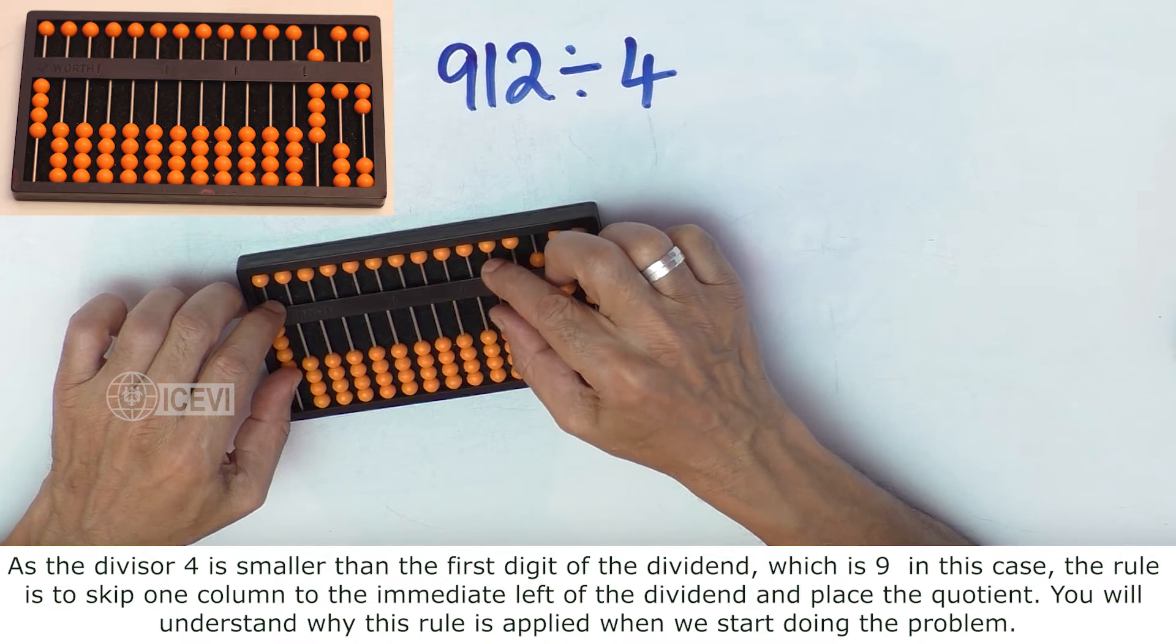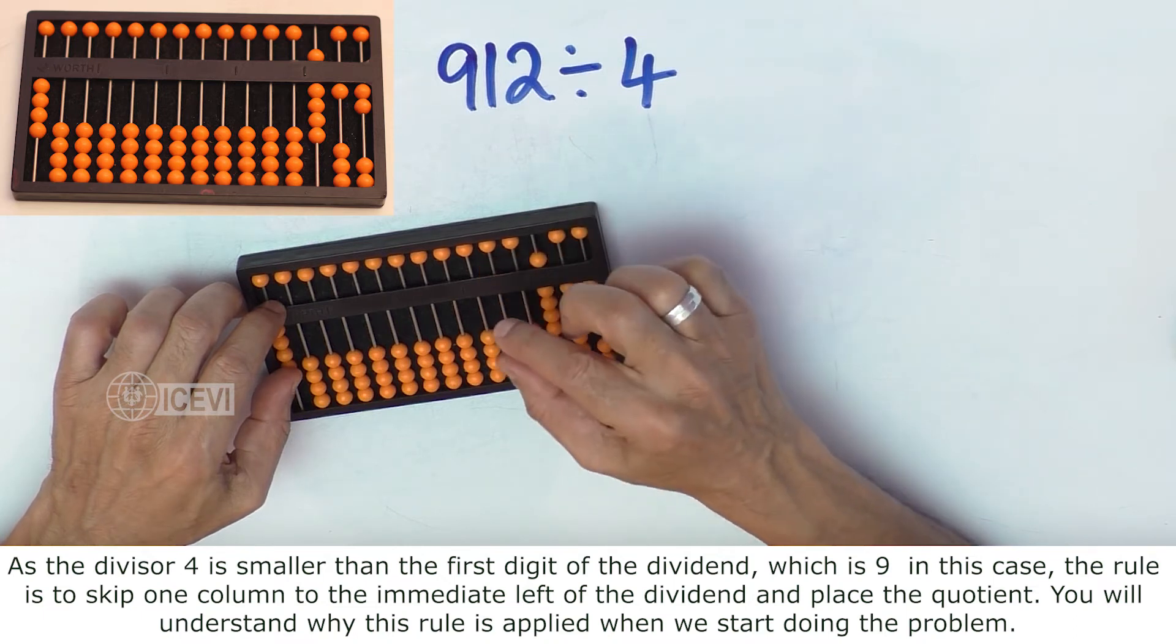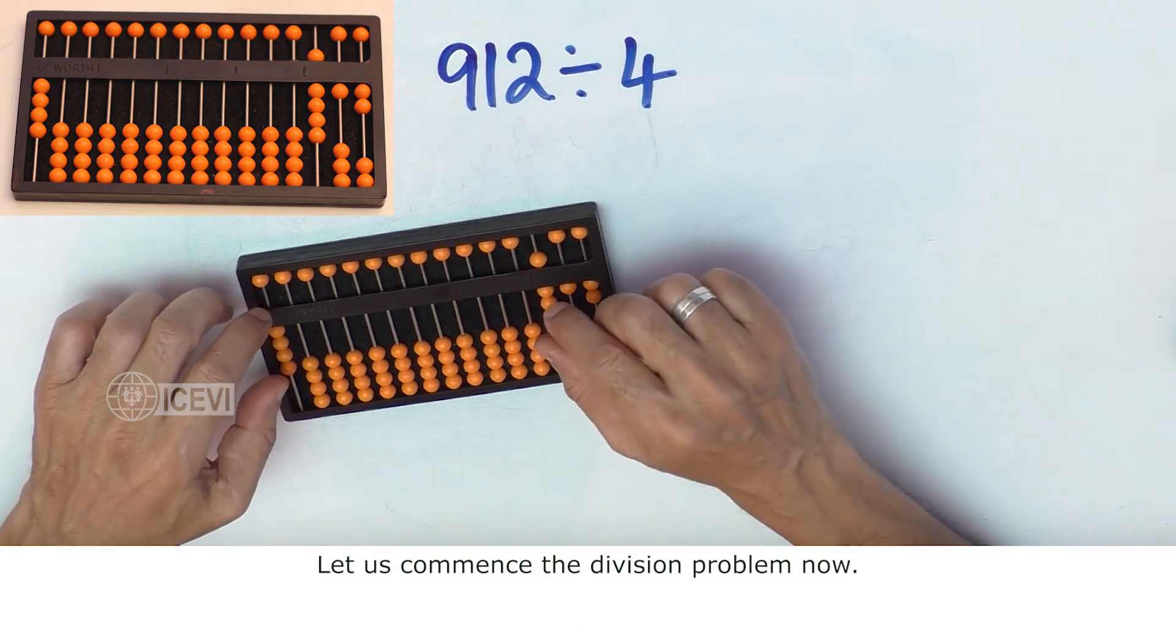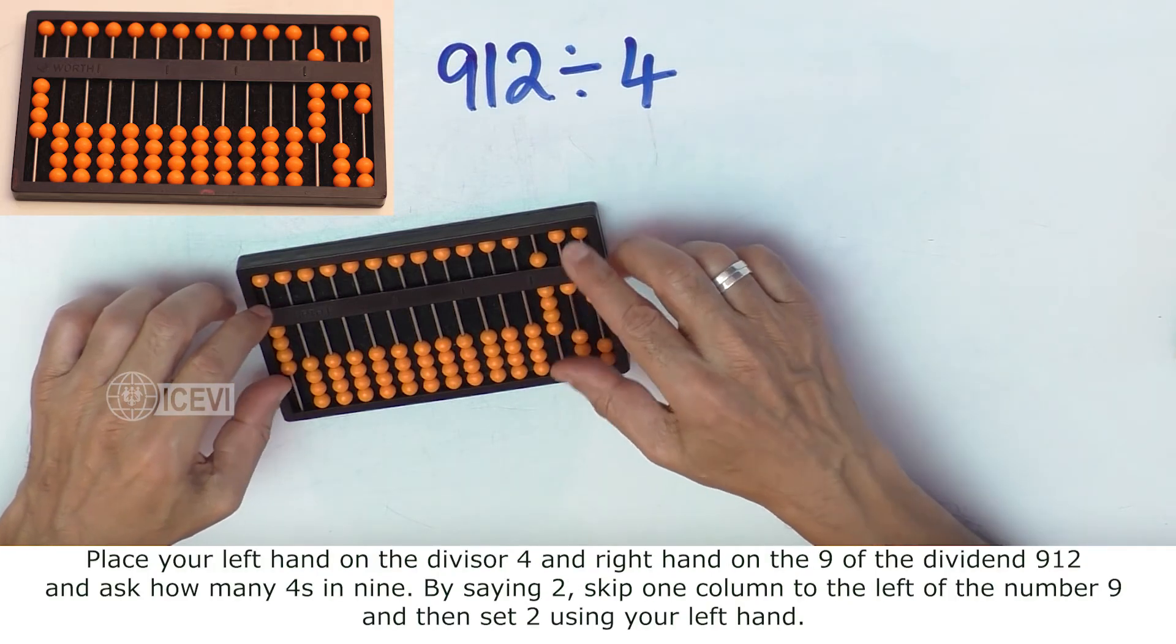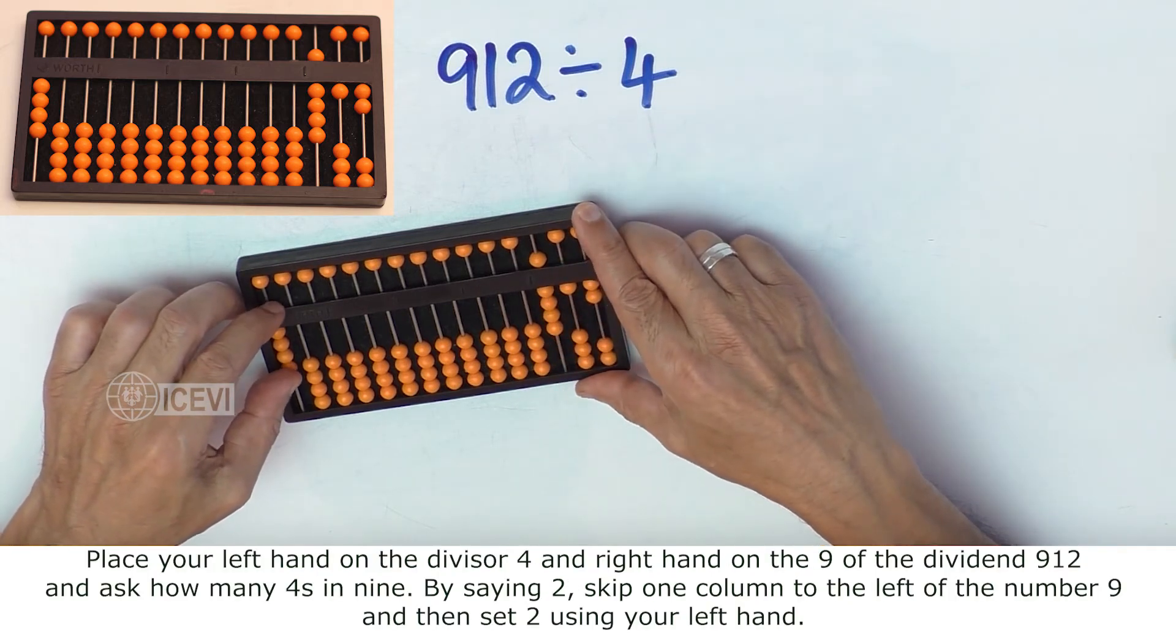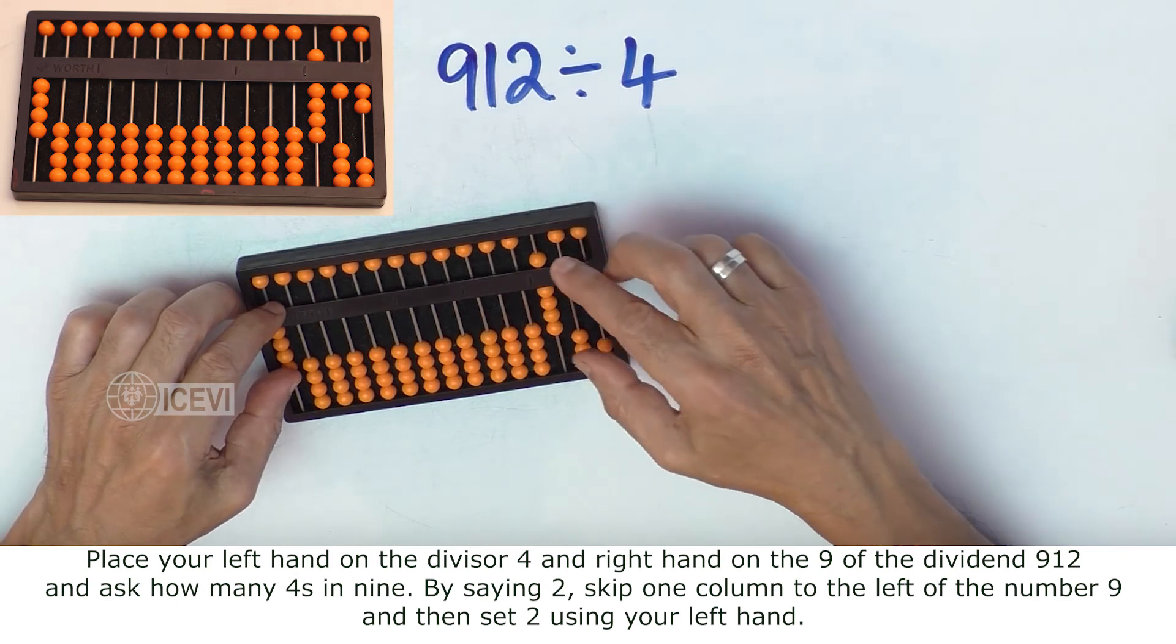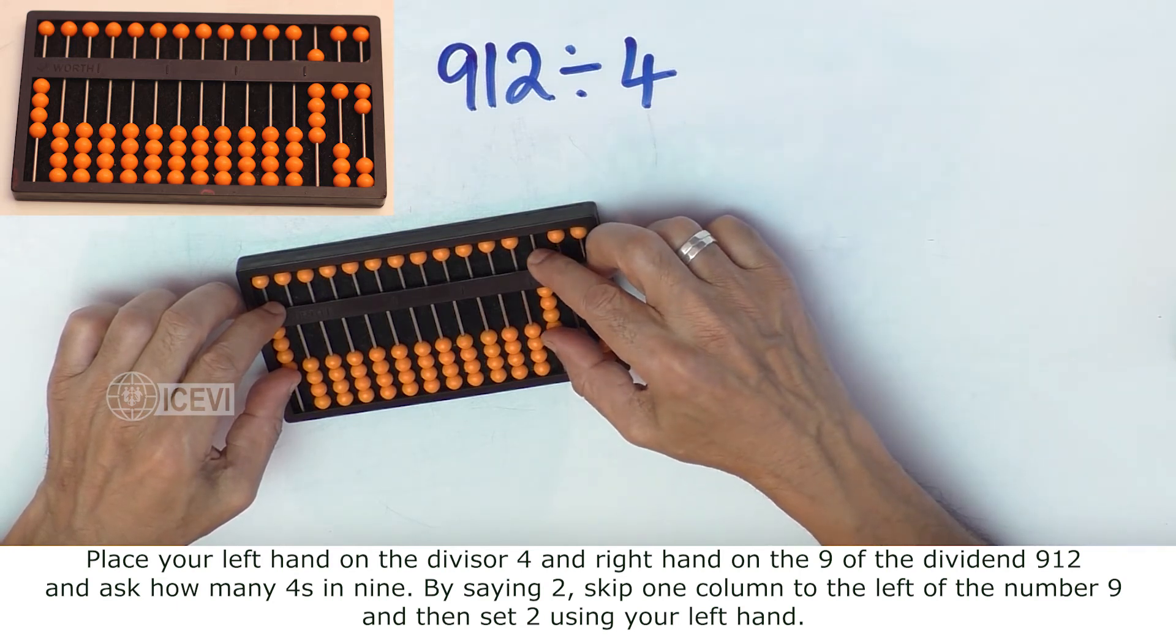You will understand why this rule is applied when we start doing the problem. Let us commence the division problem now. Place your left hand on the divisor 4 and right hand on the 9 of the dividend 912.